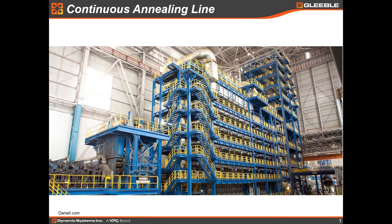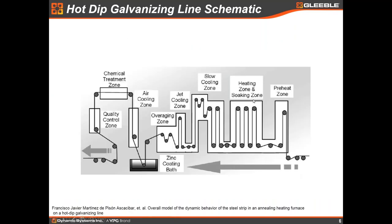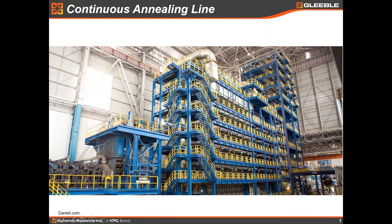To appreciate how big a beast a continuous annealing line really is — this picture borrowed from the Danieli website shows railings and manways for scale. There are several loops of strip inside this furnace, so there is a lot of material in the furnace at one time. A furnace of this size takes many minutes to swing temperature, and since it's a continuous process, you still have strip in the furnace as you're changing temperature. You have to understand what effect a temperature change will have on the product that is in the furnace as you transition from one grade to another.